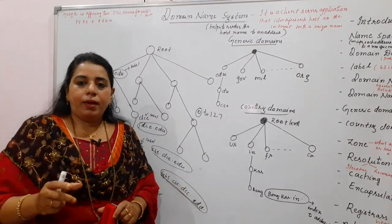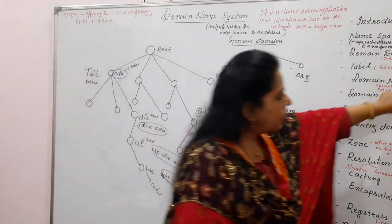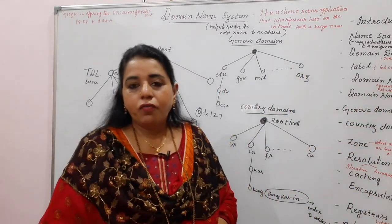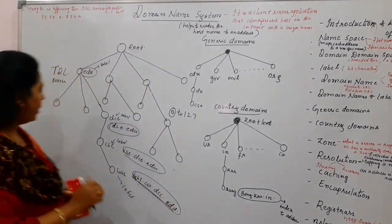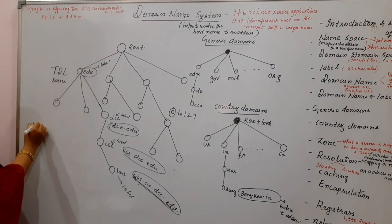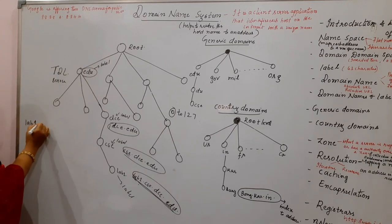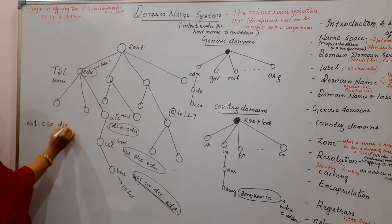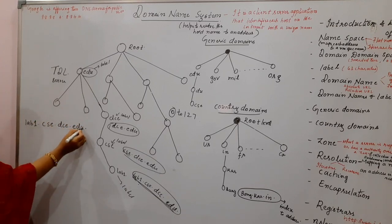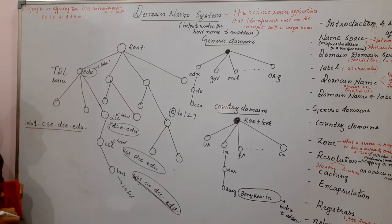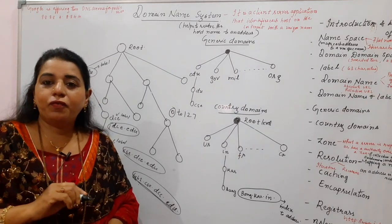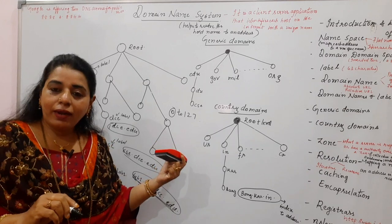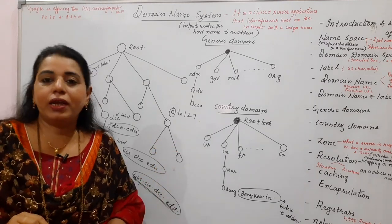When we write the domain name, there are two types. One is called the partially qualified domain name and the other is called the fully qualified domain name. A partially qualified domain name does not end with a null string. If I write lab1.CSE.DCE.EDU. — ending with a dot, that means ending with a null string — it becomes a fully qualified domain name. If you do not end the domain name with a null string, it becomes a partially qualified domain name.